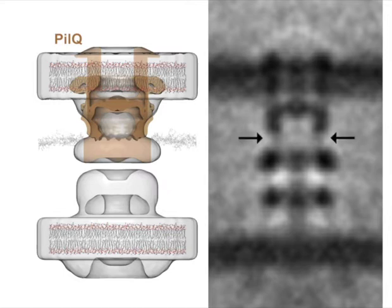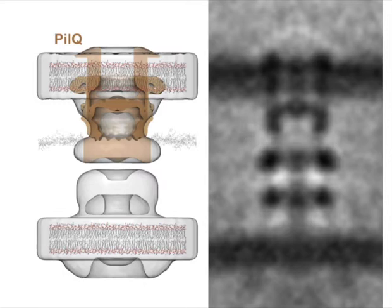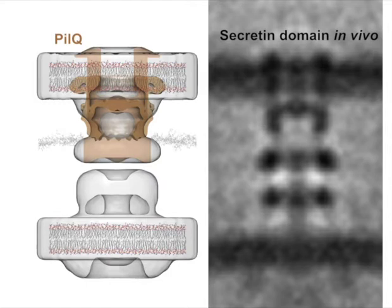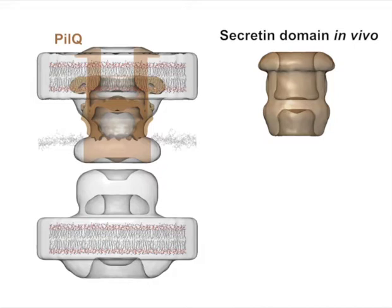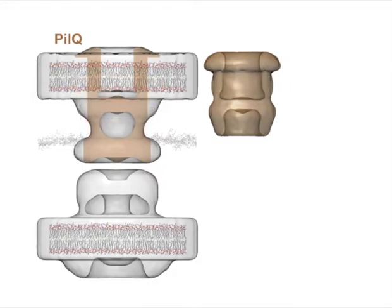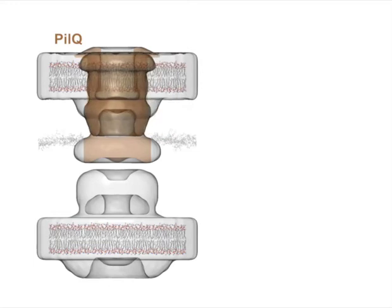Since the conserved gate and constriction regions remain intact, and there is no TSA-P protein adding density to this region, this structure gives us a clear view of the molecular envelope of the secretin domain alone in vivo. Our next task was to place the N1 and N0 domains of PLQ below the secretin domain.